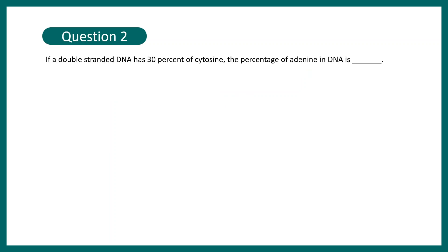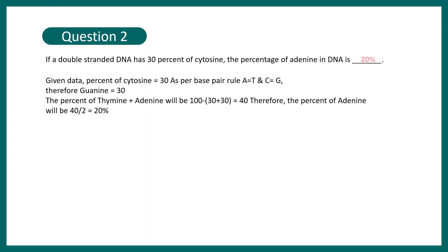Question 2: if a double-stranded DNA has 30% cytosine, the percentage of adenine in the DNA is dash. This is based on Chargaff's rule and is asked in many examinations. The correct answer is 20%. If 30% is cytosine, then 30% is also guanine, because the number of cytosine equals the number of guanine. That accounts for 60%, leaving 40% for A and T equally — so 20% is adenine and 20% is thymine.